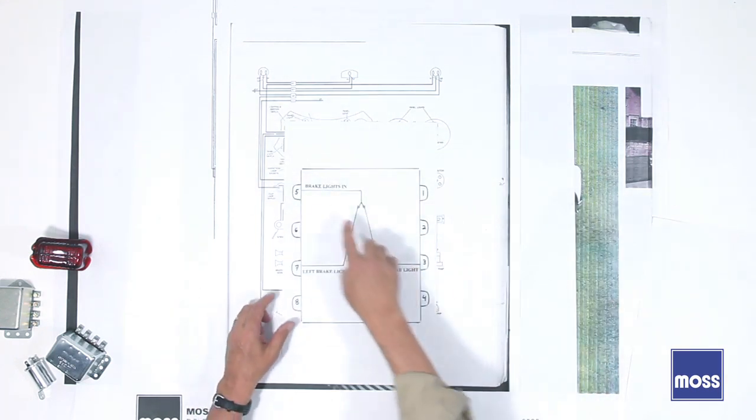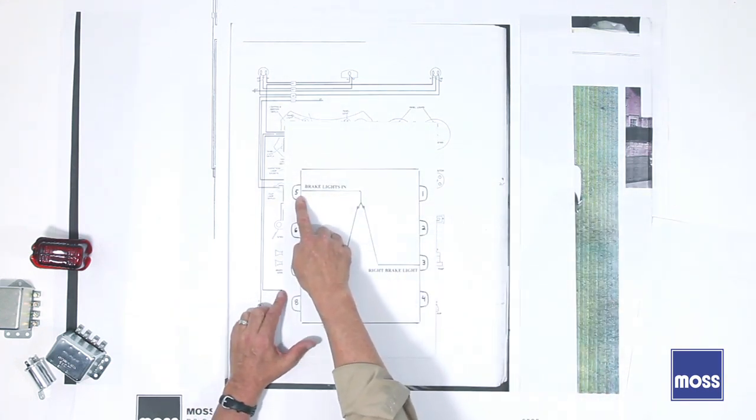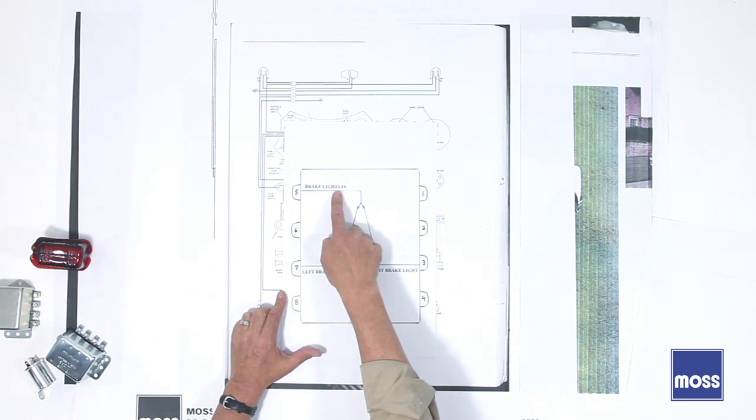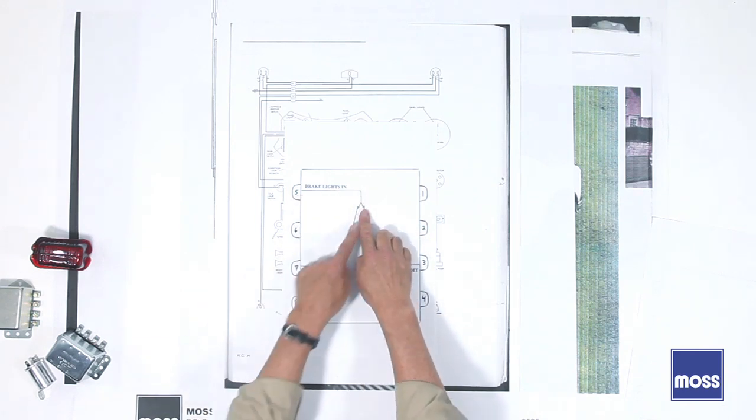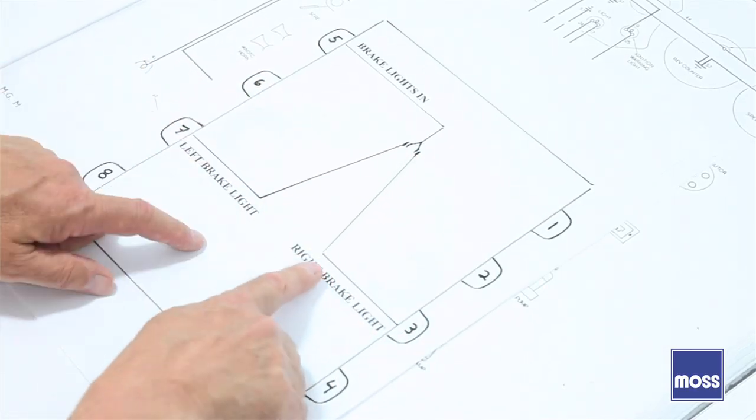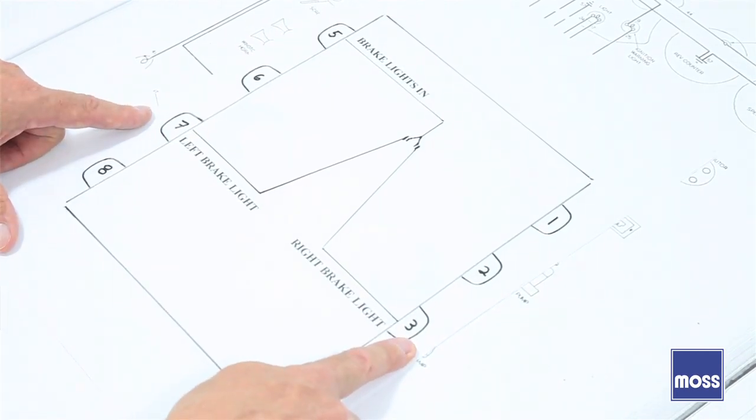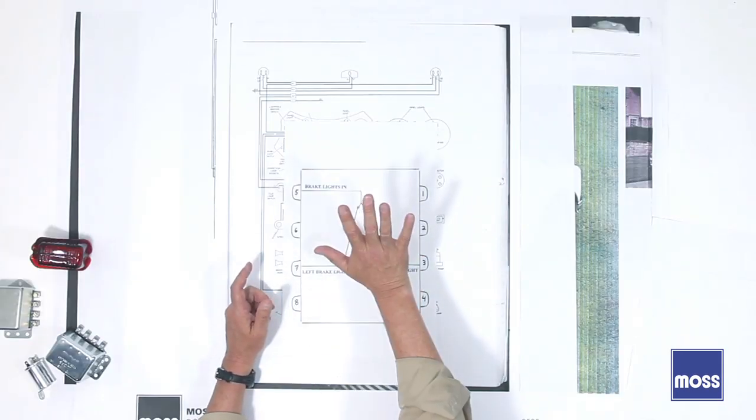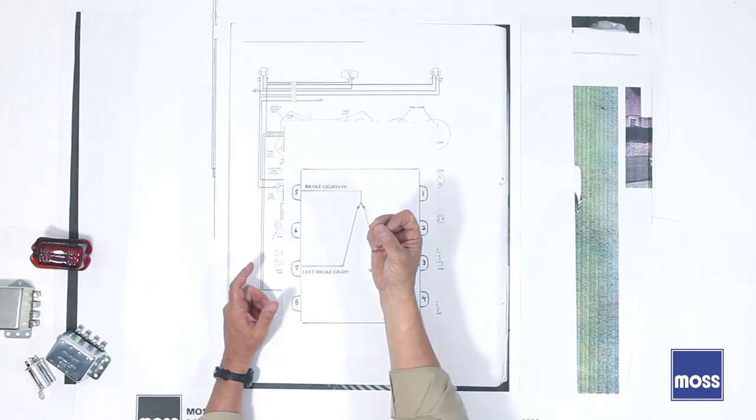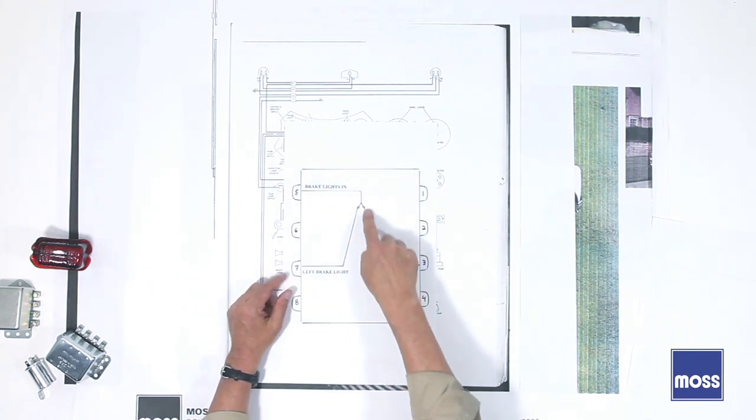When we do, first thing we're going to see is that coming in from the number five terminal, we have a line from the brake light switch. It comes in, comes down, and it splits. And when it does, it goes out number three and it goes out number seven. So I'm in the car. I step on my brakes. I have a brake light switch which becomes active. It sends power out.